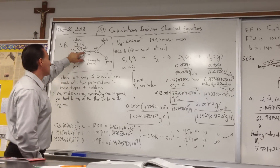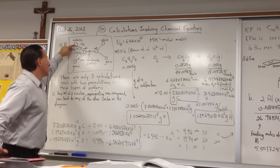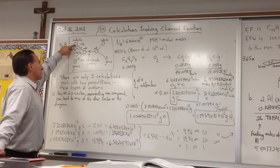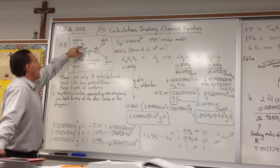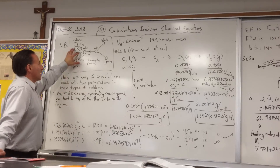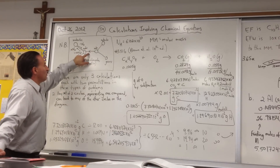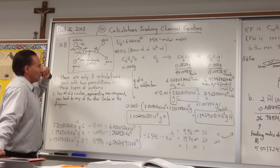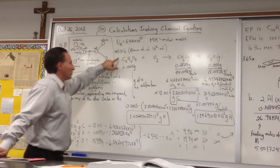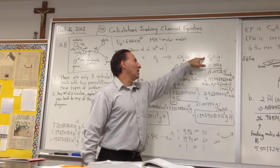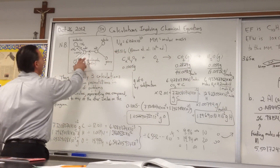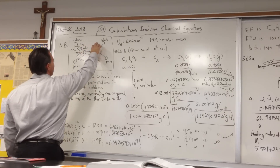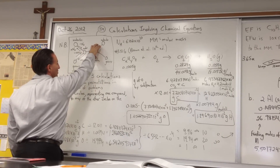If you have moles of a substance and you want to find out how many molecules you have, you multiply by Avogadro's number. If you have the number of molecules and you want moles, you divide by Avogadro's number. If you want to get to the other side of the diagram, you must go through the stoichiometry of the reaction — using the balanced reaction and the numbers that appear on it to find the ratio between moles of compounds.